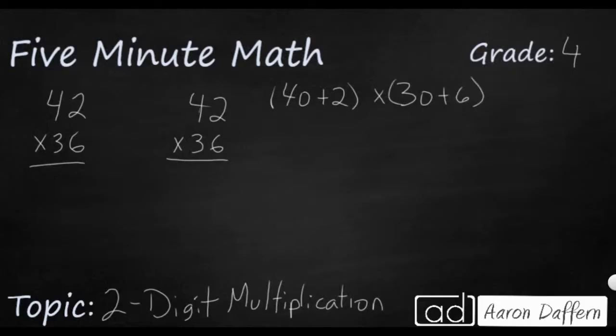I'm going to start with the 6 and multiply this by 2, then multiply by the 40. 6 times 2 is 12. Now 6 times 4 is 24, but this 4 is in the tens place, so really it's 40. 6 times 4 is 24, so 6 times 40, when you multiply by a multiple of 10, you just add a 0. 6 times 40 is 240. So I've got two partial products right there.